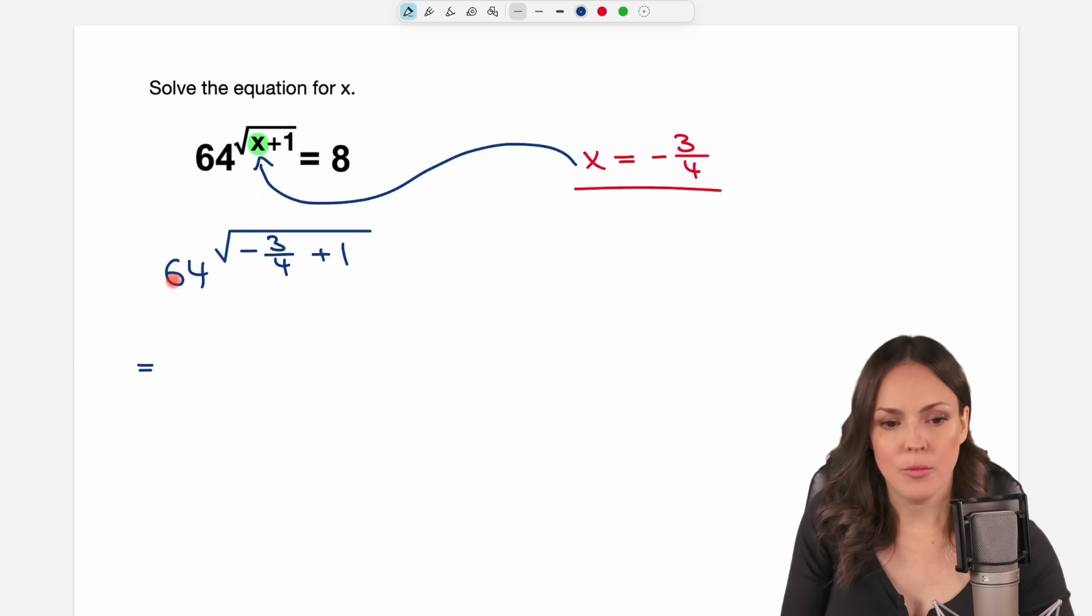We have the 64, we have the beautiful square root, but what is in here? We want to add these two numbers again, so let's write this as a fraction. We multiply each number by 4, so we have 4 over 4 here. Now we can add negative 3 plus 4 equals 1, and we keep the denominator.